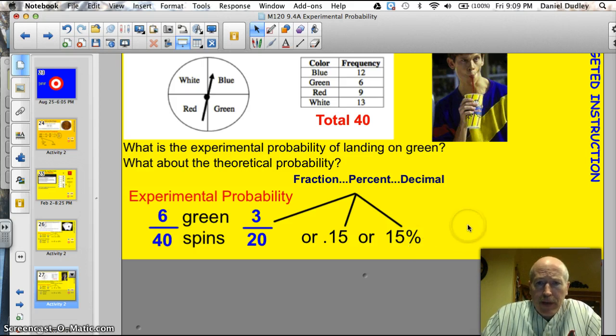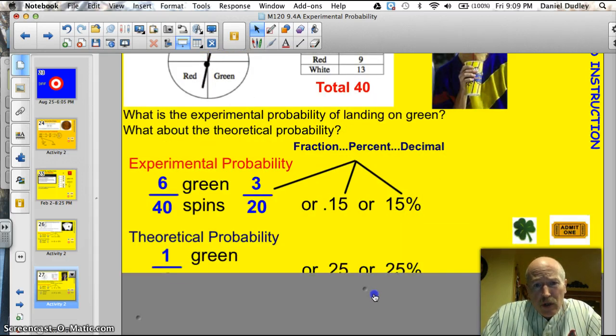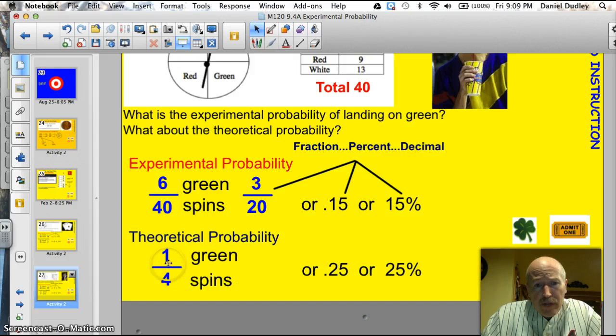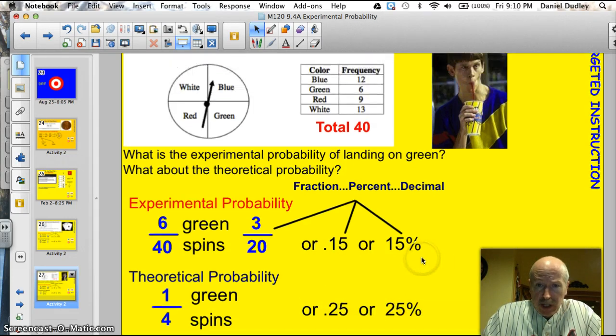All right, what should have happened? Well, when you look at the spinner, you can kind of tell. There's four equal areas, right? So theoretically, he should have hit a green one out of every four spins. So would have been 0.25 is the theoretical probability, or 25% chance of getting it. So he did not do as well experimentally as we predicted theoretically. Again, the results of the experiment don't always match the theoretical probability, or the odds.